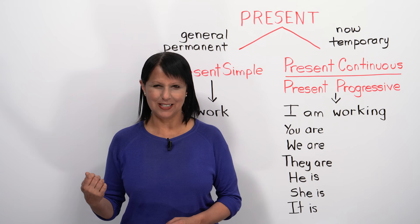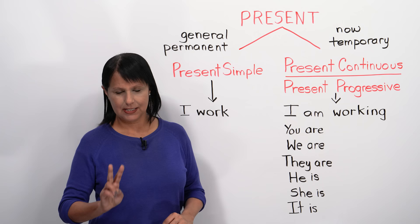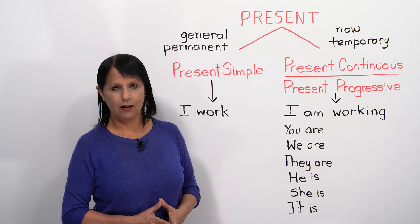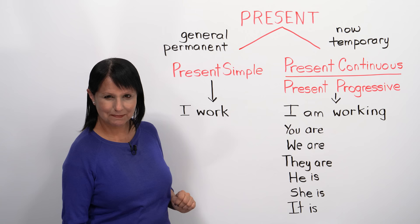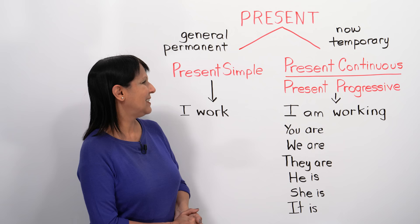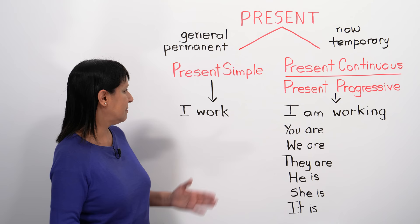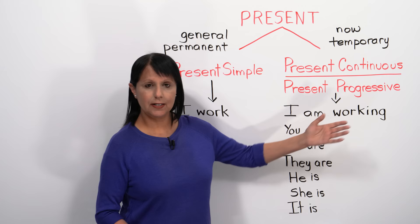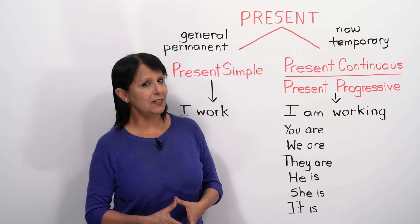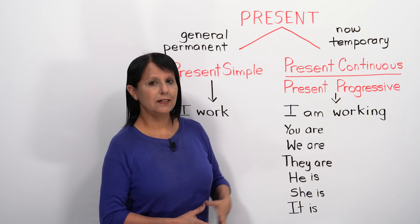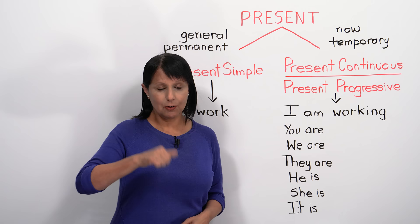There are two basic tenses to talk about the present: the present simple and the present continuous. What's the difference? In the present simple, I would say 'I work.' In the present continuous, I would say 'I am working.' So what is the difference? 'I am working' talks about something that's happening right now — for example, I am teaching, you are watching, you are listening.